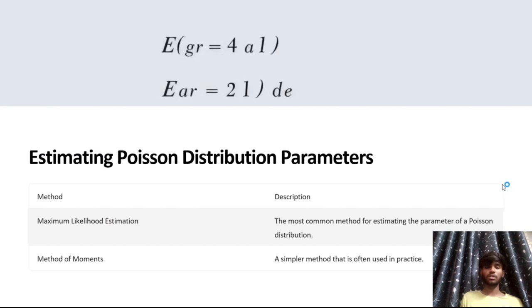Estimating Poisson distribution parameters — methods and descriptions. Maximum likelihood estimation is the most common method for estimating the parameters of a Poisson distribution.